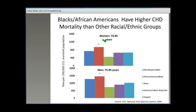This next slide highlights that Blacks or African Americans have higher CHD mortality than other racial-ethnic groups. On the vertical axis, we show the CHD mortality rate per 100,000 U.S. standard population. Researchers have demonstrated that CHD mortality rates are higher for Blacks or African Americans for those greater than 45 years of age. Even at the oldest age groups, such as 75 to 84, Blacks or African Americans still have higher rates of CHD mortality compared to other racial-ethnic groups.